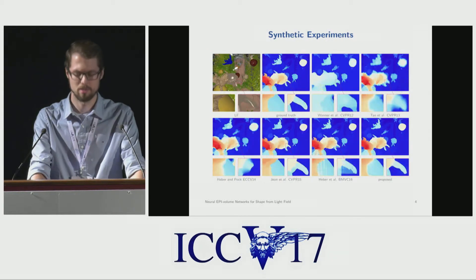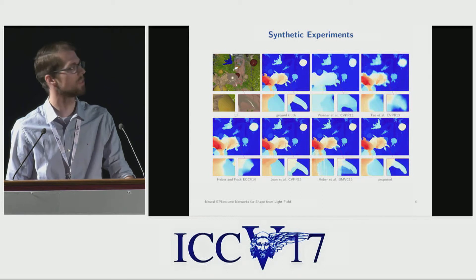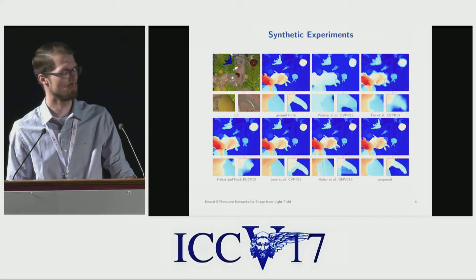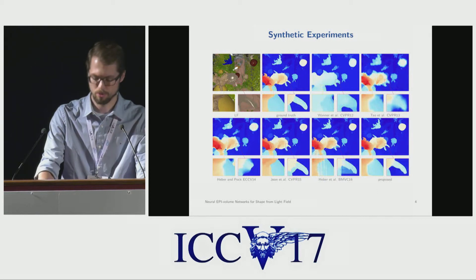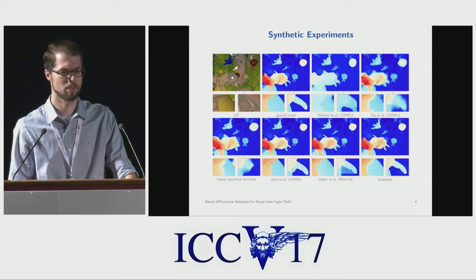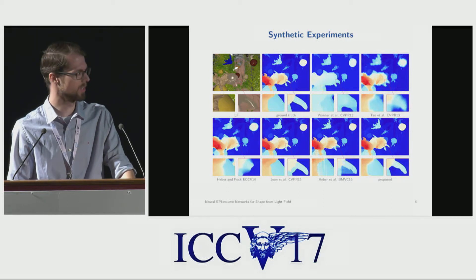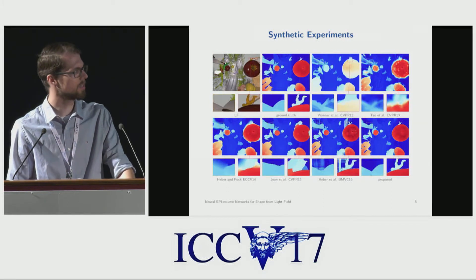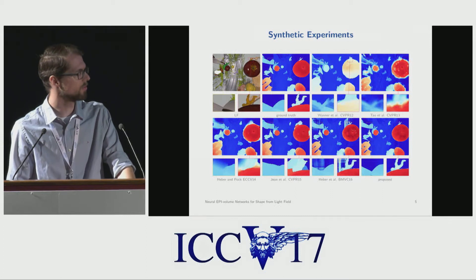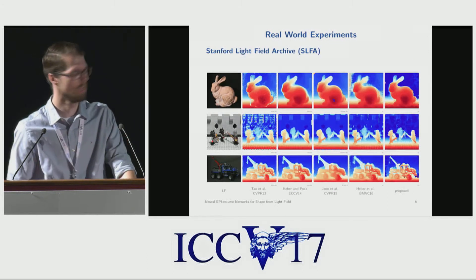Here in this slide, you see some synthetic results. To the top left, you see the center view of the light field with some close-up views. Next to it, you see the ground truth, followed by several competing methods, and to the bottom right, you see the output of the proposed method. When you take a look at the result of the proposed method, you can see that we can indeed learn this spatial regularization, and it is also able to provide clear depth discontinuities. Here is another example where you can see that we can reconstruct a lot of details which other methods can't. Also, if you compare it to the second-best method, you see the streaking artifacts which we can remove.